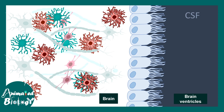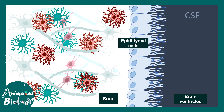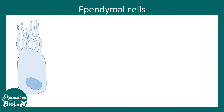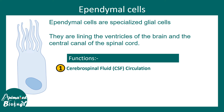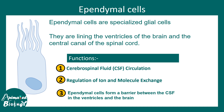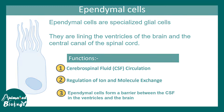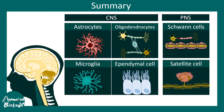Now let's talk about the fourth glial cell type in the CNS: ependymal cells. These cells line the brain ventricles and have cilia projecting from their apical side. These cilia beat and help in CSF movement. The brain ventricles are filled with cerebrospinal fluid, which needs to circulate throughout the brain and spinal cord. Ependymal cells ensure this CSF flow occurs. They are specialized glial cells that line the brain ventricles, regulate molecular exchange, and act as a barrier between CSF and the brain tissue.